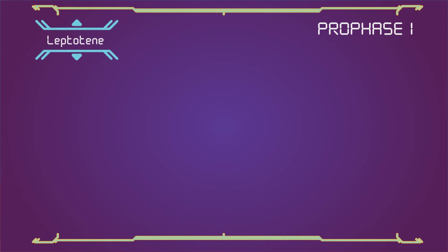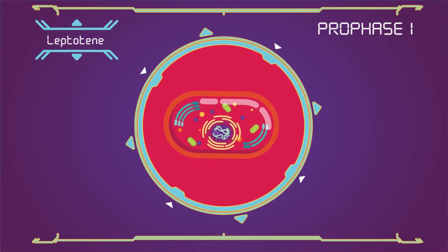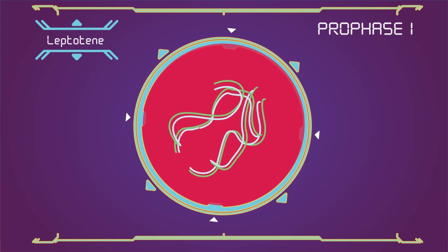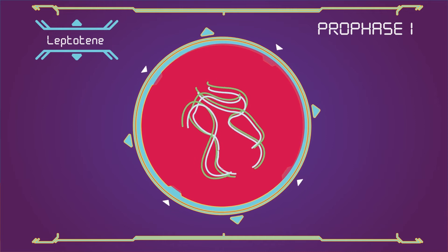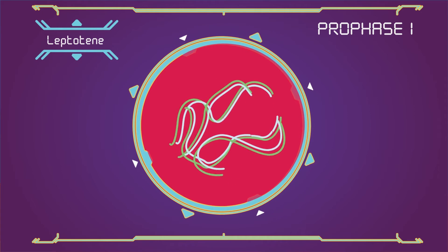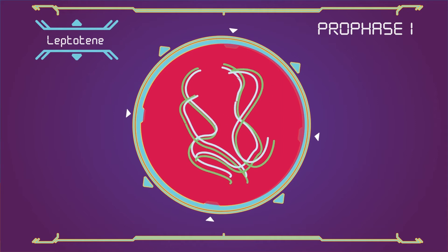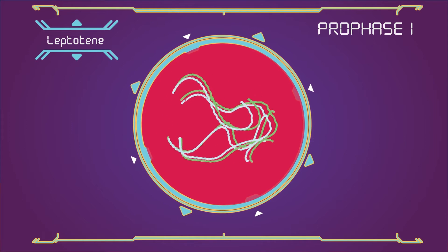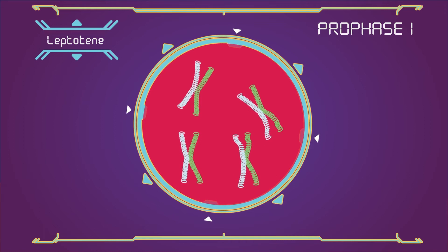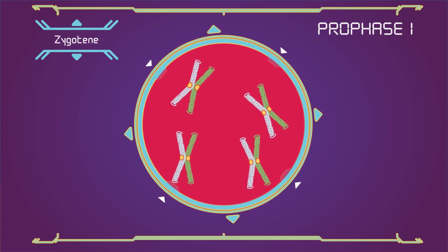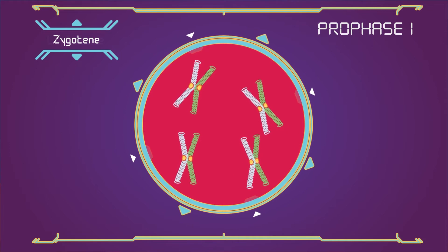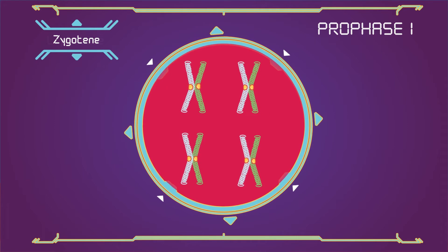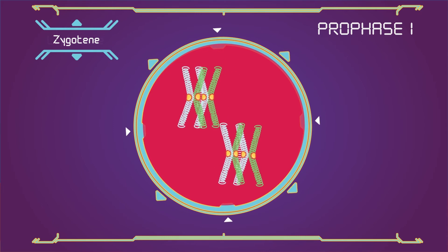Leptotene: in this stage of prophase 1, individual chromosomes, each consisting of two sister chromatids, become individualized to form visible strands within the nucleus. Leptotene is of very short duration and it's when the progressive condensation and coiling of chromosome fibers takes place. Zygotene: chromosomes approximately line up with each other into homologous chromosome pairs through synaptomal complex. The paired chromosomes are called bivalent or tetrad chromosomes.